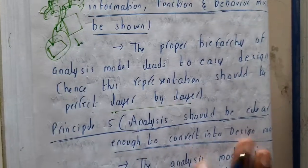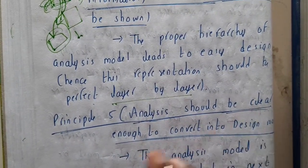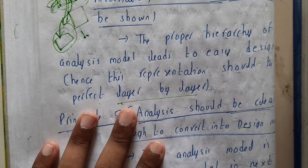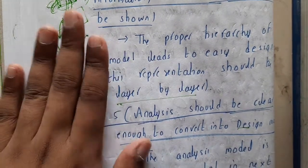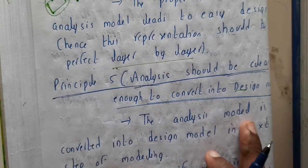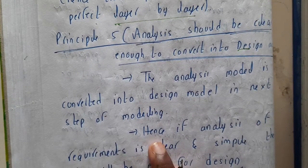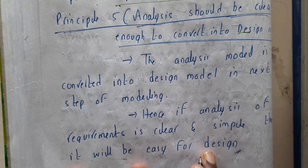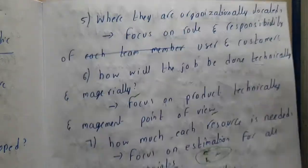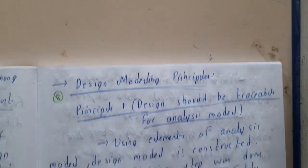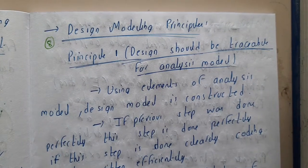The last principle: analysis should be clear enough to convert into a design model. What you will be doing in the analysis model is converting this analysis into a design model. It should be convertible and easy to understand. The analysis model is converted into the design model in the next modeling step, so if the analysis requirement is clear, it will be simple to design. I hope everyone got a basic idea about analysis modeling principles. In the next lecture we will continue with design modeling principles.